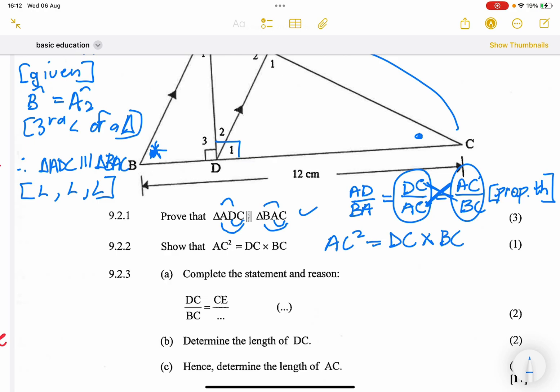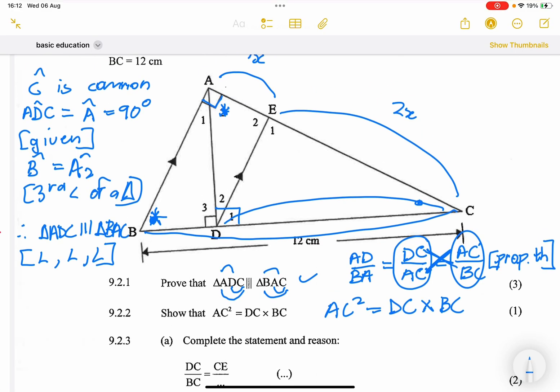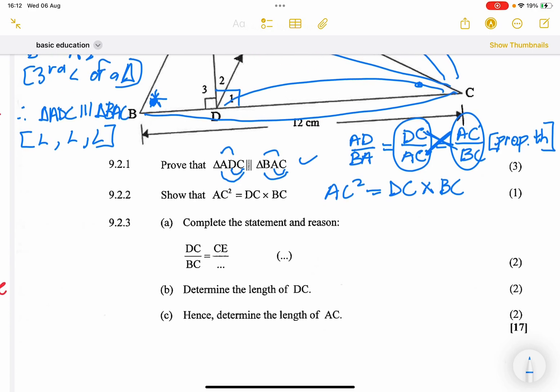So the next one says to us, DC over BC. So let's see, where is DC? There it is there. Over BC, that's the entire side there. Okay, so that should be equal to, and now please, I want you to note, that's equal to CE over the entire side, which is CA. So that would be CA.